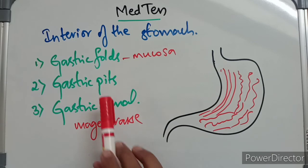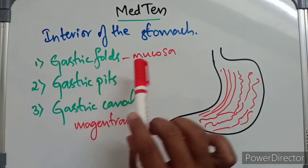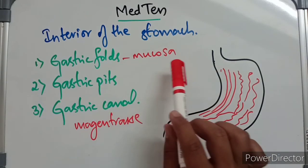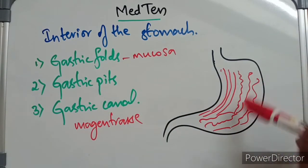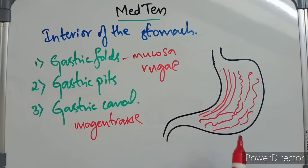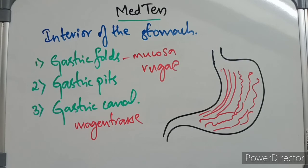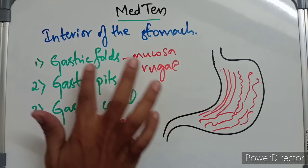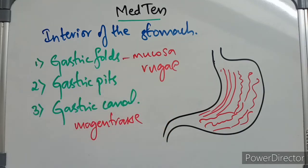The gastric glands release their secretion in the gastric pits. Gastric folds are formed by the mucosa of the stomach and are also called rugae. Upon full distension of the stomach, you cannot find the gastric folds; when it is empty, gastric folds are more prominent. So this is about the interior of the stomach, consisting of gastric folds, gastric pits, and gastric canal.